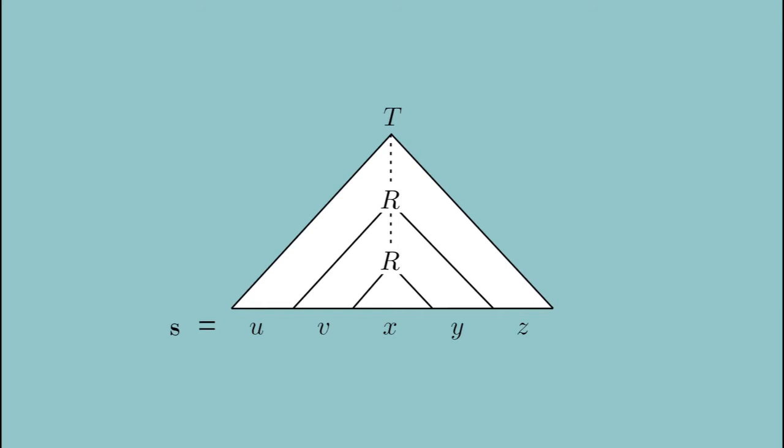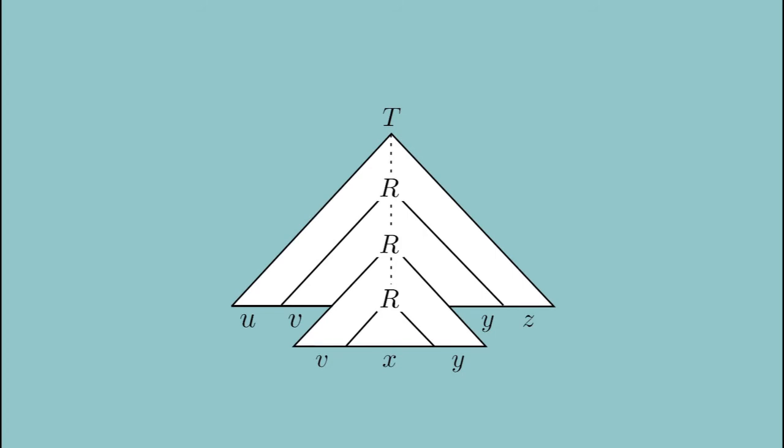On this long path, some variable symbol R must repeat because of the pigeonhole principle, as the following figure shows. This repetition allows us to replace the subtree under the second occurrence of R with the subtree under the first occurrence of R and still get a legal parse tree.